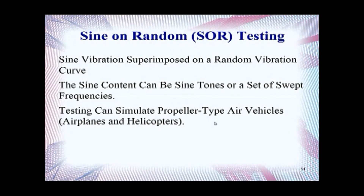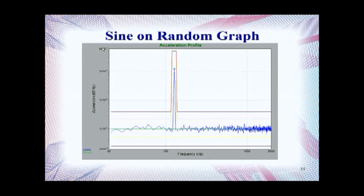Sine on Random testing can simulate propeller-type aircraft vehicles such as airplanes and helicopters. Here is an example of a Sine on Random graph. The vertical axis shows acceleration expressed in G squared per hertz power spectral density, and the horizontal axis is expressed in frequency. You have your random curve — for this test it is a flat spectrum random vibration test — and here you have your sine tone, an individual sine tone occurring within tolerance lines, sitting on top of your random vibration curve. Therefore, it is called Sine on Random.